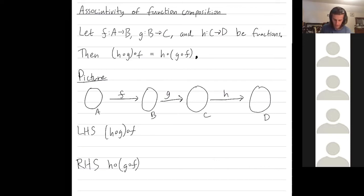So on the left-hand side, what I'm doing is I'm first combining h with g. When I combine h with g, I get a function that goes all the way from B to D. And then if I wanted to, I could tag f on the front.